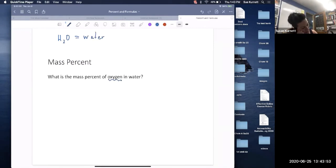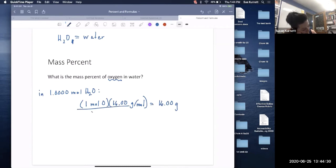Mass percent of oxygen. Well, there's one oxygen. So let's get a sample size of one mole of water. This is a one, so there's one mole of oxygen. And oxygen has a molar mass of 16.00 grams per mole. And in one mole of water, there's one mole of water.